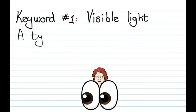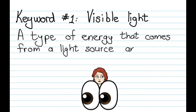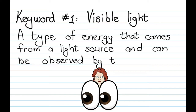Our first keyword is visible light. Light is a type of energy, and visible light is a type of energy that comes from a light source and can be observed with the human eye.